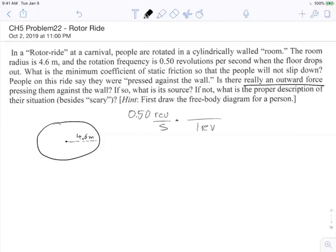Well, what's one revolution mean to us? One revolution means you go around in a circle one time. Going around in a circle means traveling a distance of 2πr. We know what r is—the radius is 4.6. So that means 0.50 revolutions per second, and one revolution means 2π times 4.6 meters.